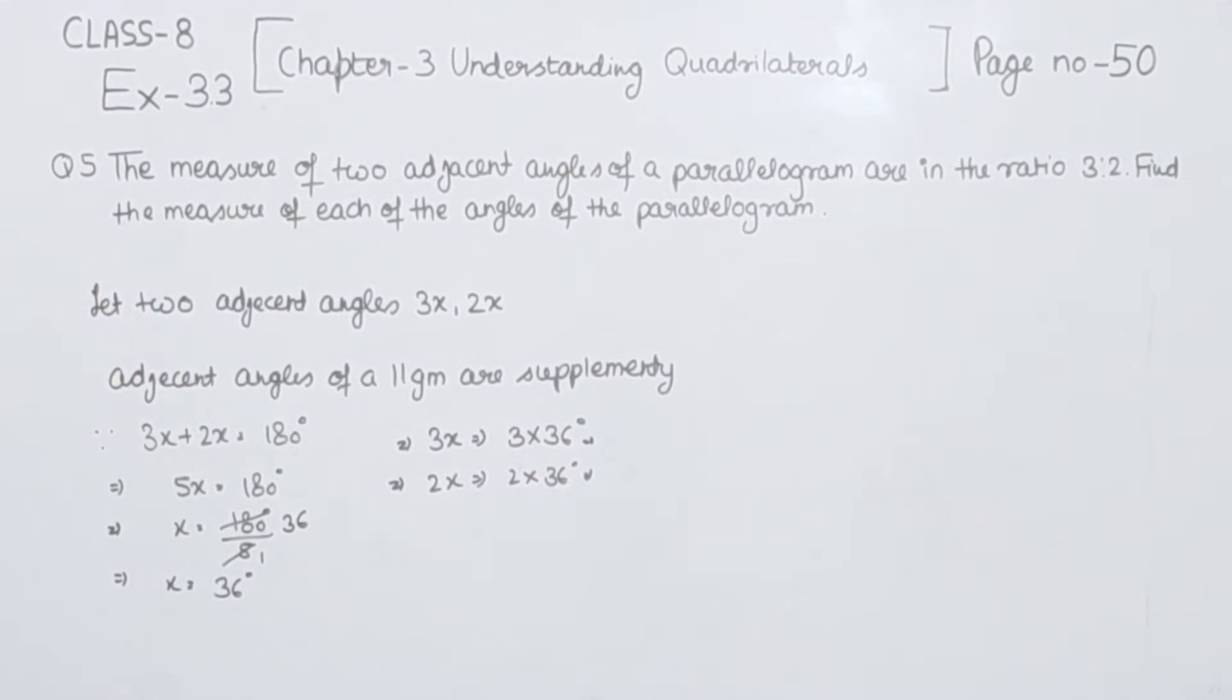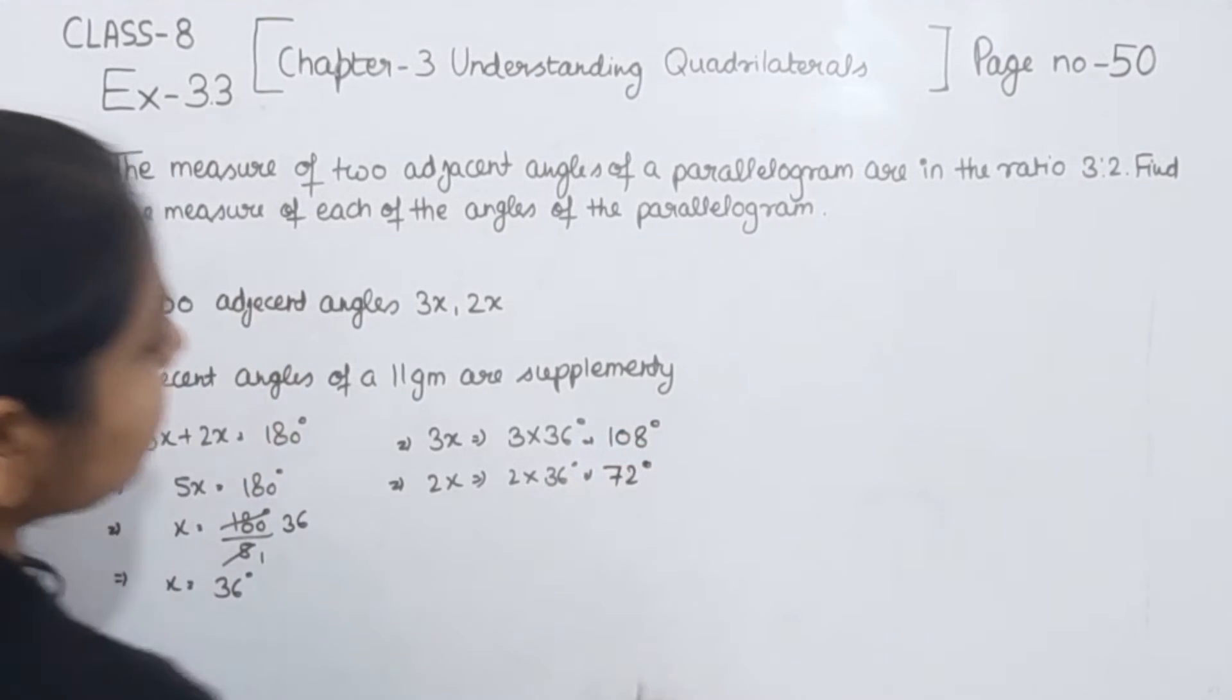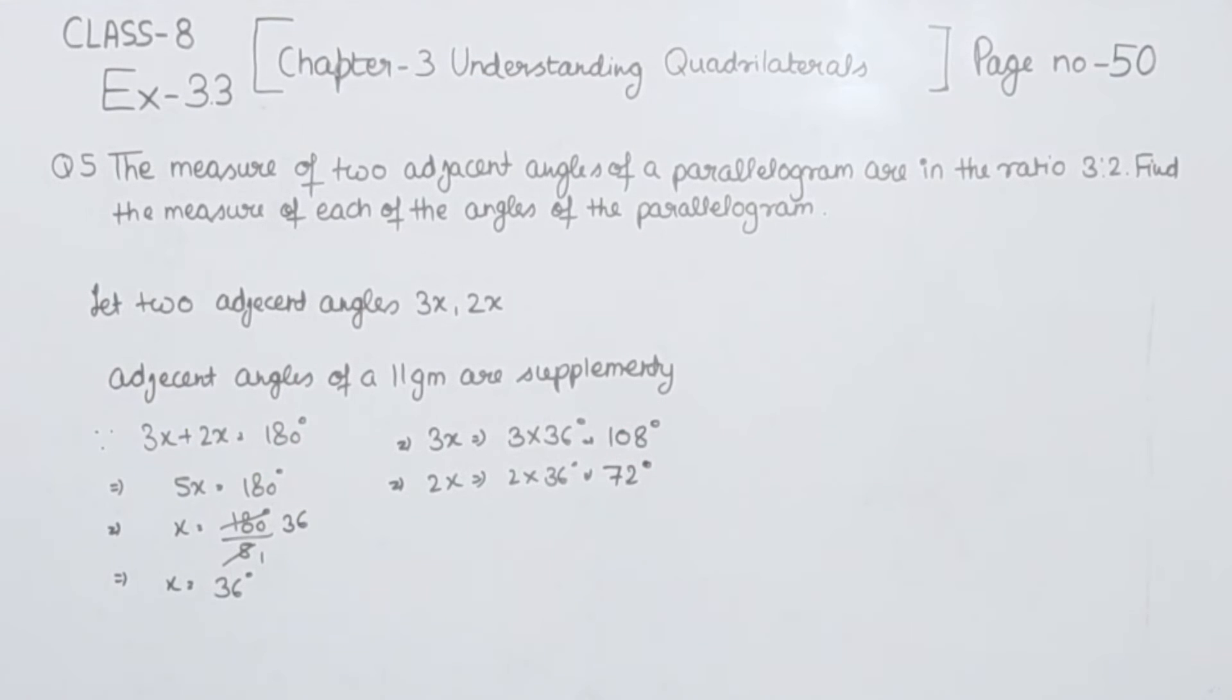So, we are going to multiply this one, we are going to get the adjacent angles. Now 3 multiplied by 36 we have 108 and 2 multiplied by 36 will have 72 degrees.